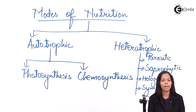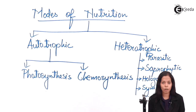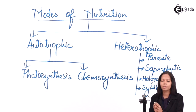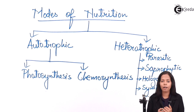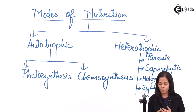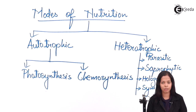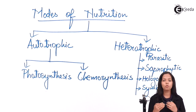Next is saprophytic. Saprophytic means external digestion — enzymes are released outside the body, the food is digested externally, and the nutrients are absorbed by the whole body. Examples are bacteria and fungi. Holozoic means ingesting the whole food material; it is carried out in human beings.